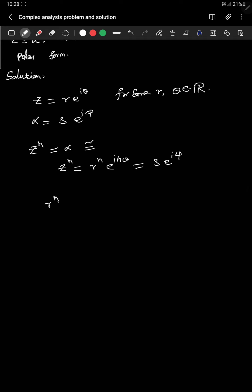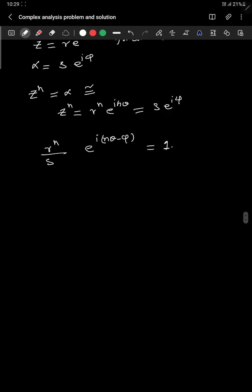So you take all these things and I leave it there one. So this is r^n/s·e^(i(nθ-φ)) equal to 1. And we know when you take absolute value it is very easy to see that. Suppose if you take the absolute value on this side you will still get 1.